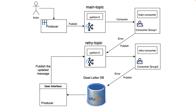In case of any exception in the main consumer, we don't want to retry processing that message there. Why? We don't want the throughput to degrade. We want the main consumer, in case of any failure, to publish that message to another topic — let's call it the retry topic. Then we'll have another consumer listening from this topic, and if the first attempt is successfully processed, the retry consumer will do nothing afterwards with that message.